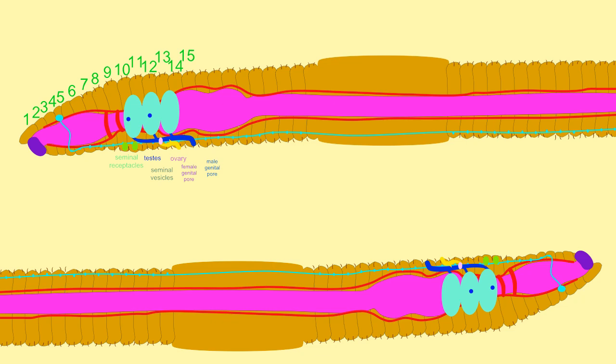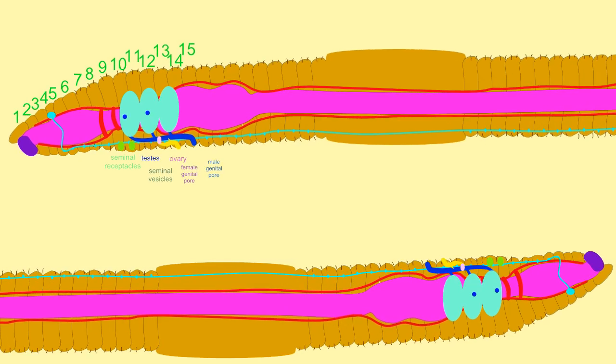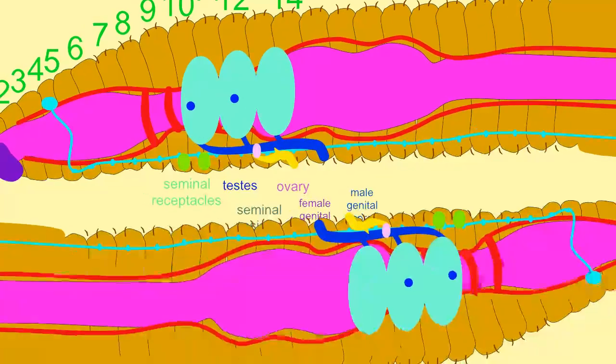When two earthworms mate, they align in opposite directions.